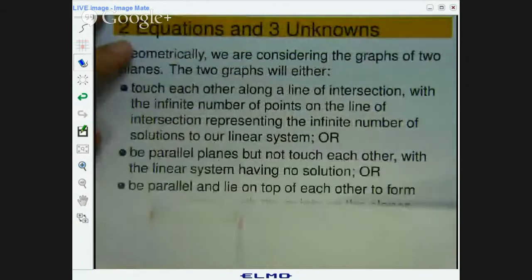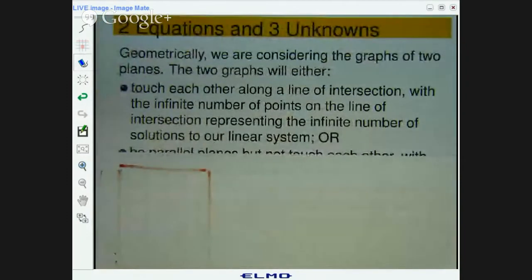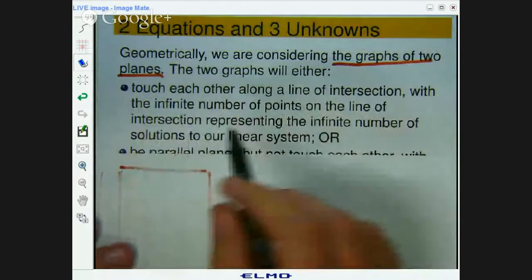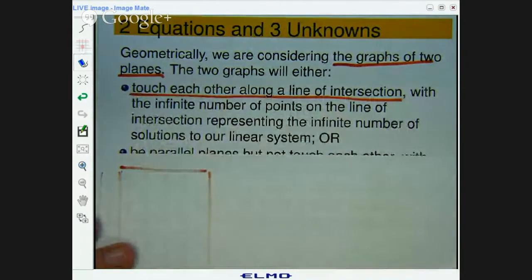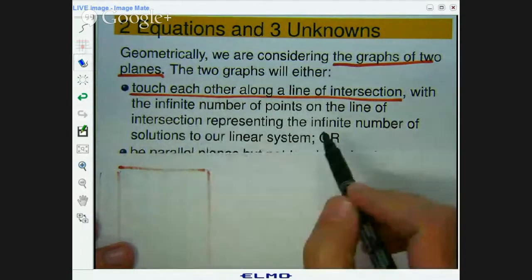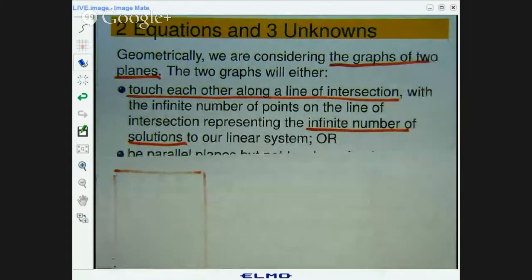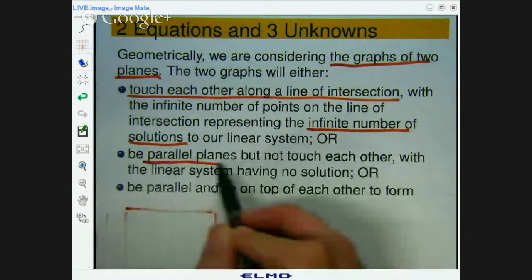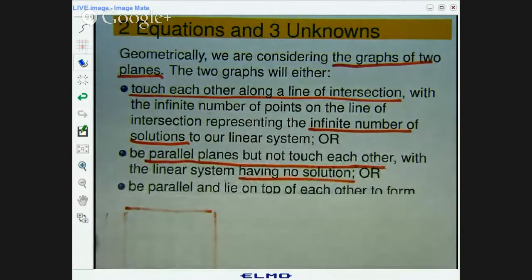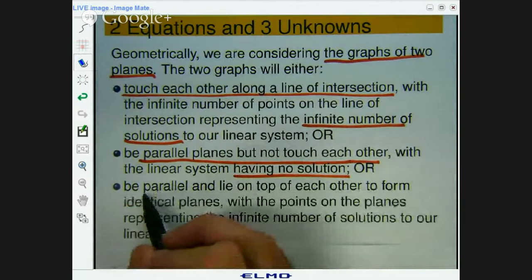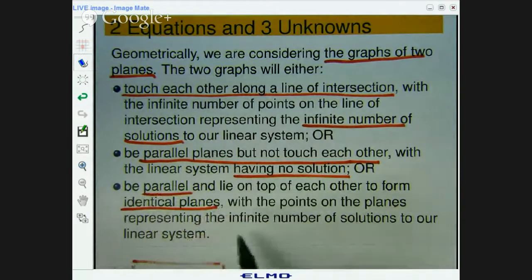Now geometrically we've got two planes here, and we want to know how, if at all, these planes are interacting with each other. So from a geometrical point of view, we're considering the graphs of two planes. And the graphs will either intersect along a line, in which case you've got an infinite number of solutions with the two planes intersecting as a line. The planes could be parallel planes but not touch each other, in which case the linear system has no solutions. Or the third case is that they're parallel and identical, and again you've got an infinite number of solutions.